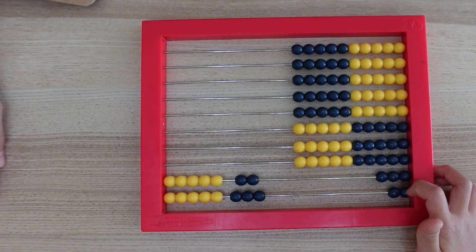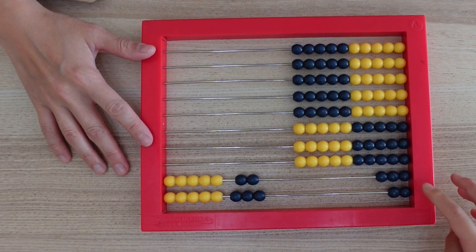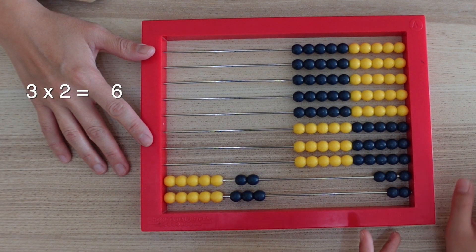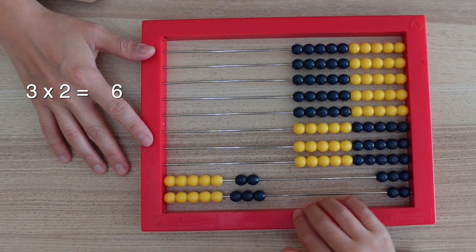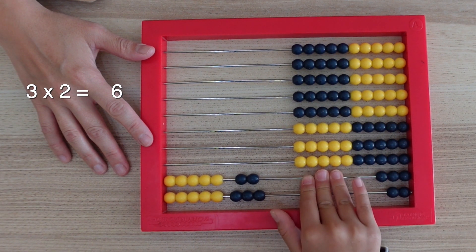Now, 3 taken 2, or 2 taken 3. 3 beads taken 2 beads is 6 beads, which stands for 6 ones.